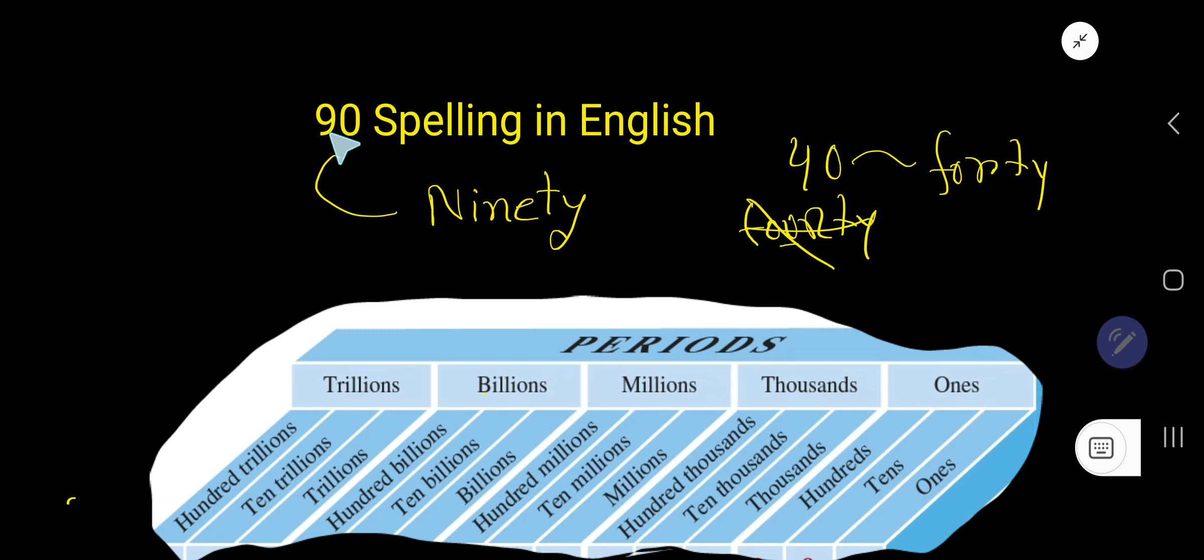So this number will come under two digits. So under this number, we will use place value. 0 is in one's column and 9 is in ten's column. 9 is in ten's column means you need to multiply this 9 by 10, and 0 is in one's column means you need to multiply this 0 by 1.